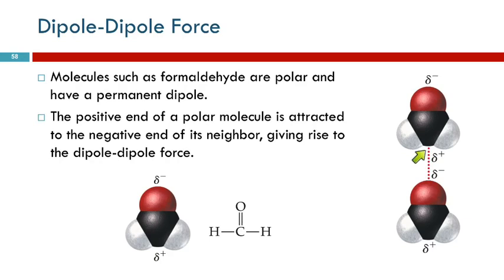This little delta — lowercase Greek delta, looks like a letter D with a posture issue — stands for a partial charge. This isn't an ion with a minus one or plus one charge. It might be a plus 0.1 and a minus 0.1 charge — a fractional charge. Exactly how much the charge is, we don't need to care about.